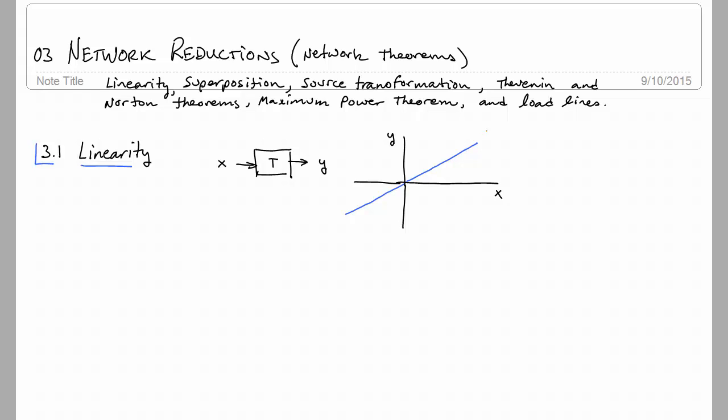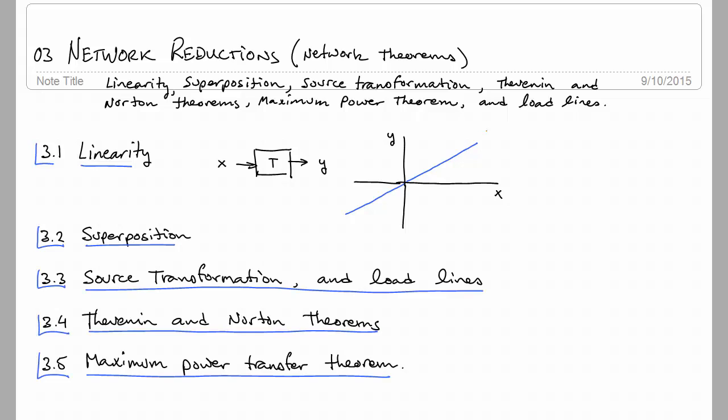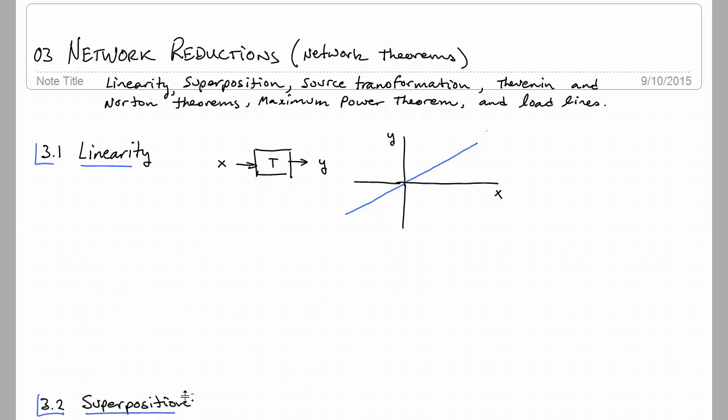They often allow us, when applied to circuits, to actually reduce the complexity of a circuit to the point where we don't have to use nodal or mesh analysis, or at least it's a much simpler problem with fewer nodes or fewer meshes. In this lecture we will be covering the following five topics: linearity, superposition, source transformation and along the way load lines, Thevenin and Norton theorems, and then maximum power theorem. I believe this lecture is spread out over seven lessons. In the first lesson, we will be talking about linearity.